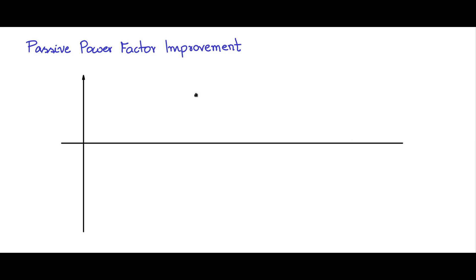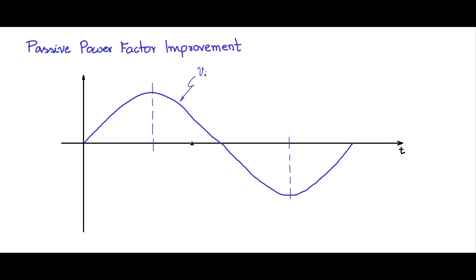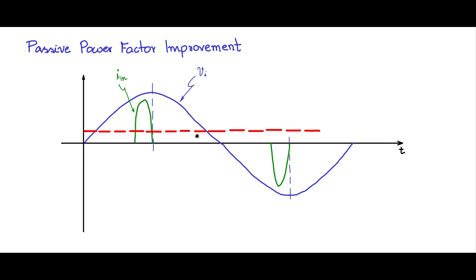To get a hang of what we should do: we have the input voltage waveform sinusoidal, and the current waveform for the rectifier capacitor filter circuit is in this fashion. This delivers an average load power — call that P naught or P load. Now, to deliver the same average power P naught if we had a pure resistive load, how will the current look?